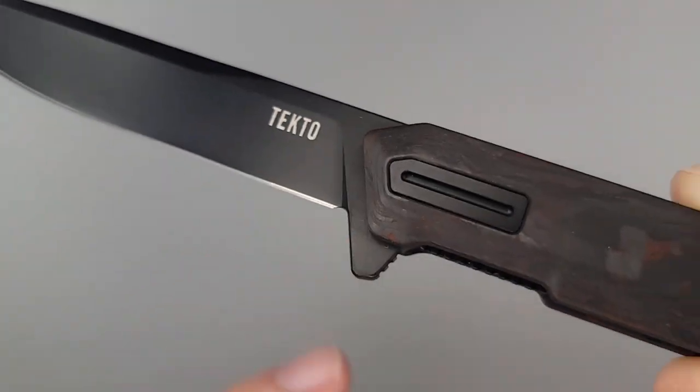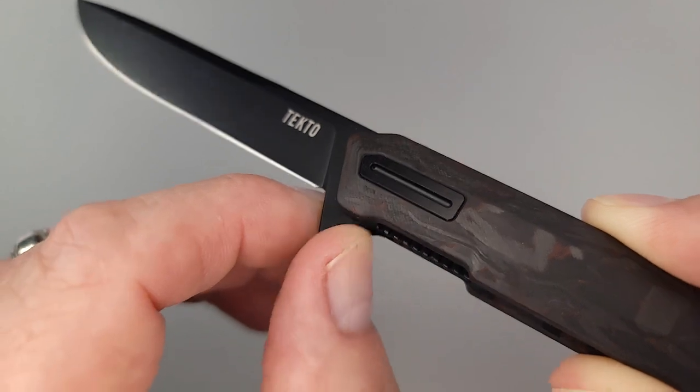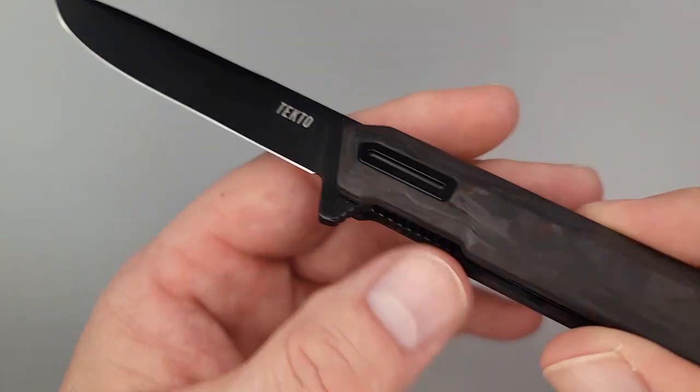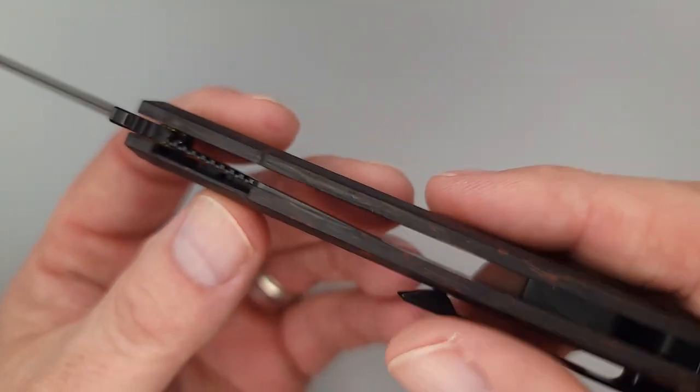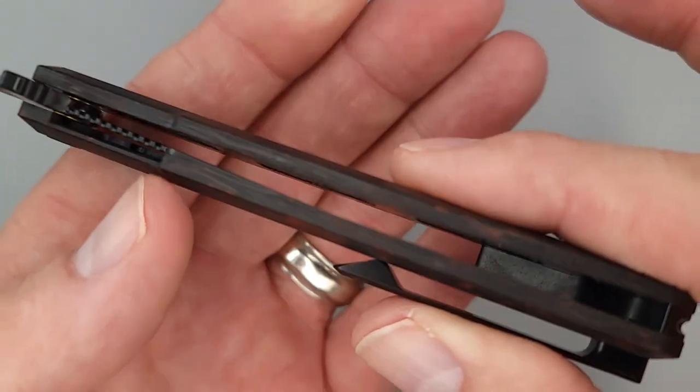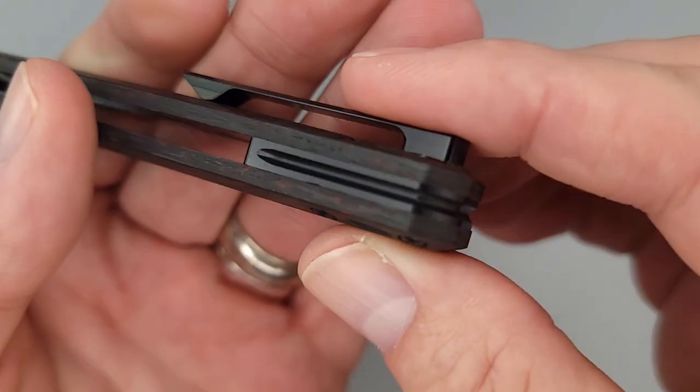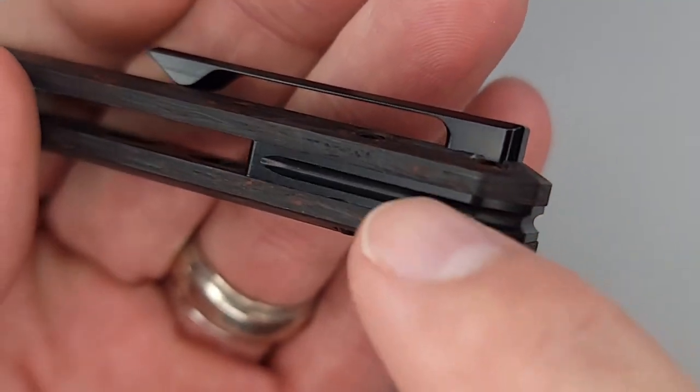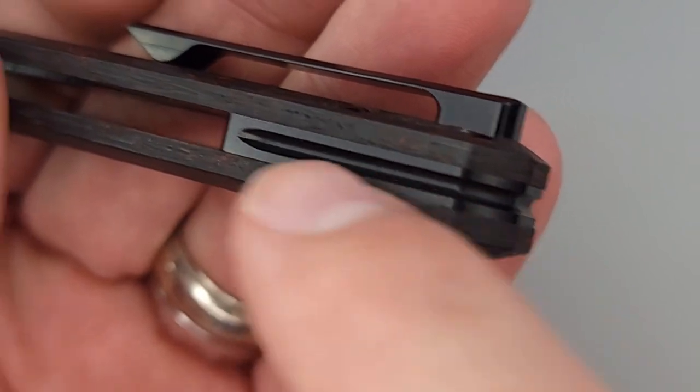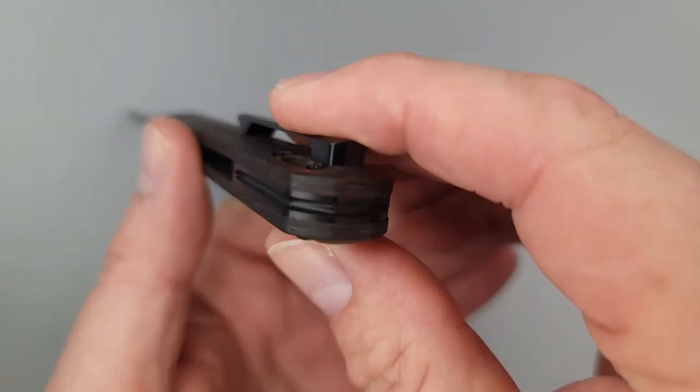Hold up, we're going to check out the jimping here in just a second. And for all of you that like the recessed liners, there you go. Look at that, no liners that you can see. And there's your back spacer. Very nice looking back spacer. Has a little bit of milling going through to give it a very nice appearance.